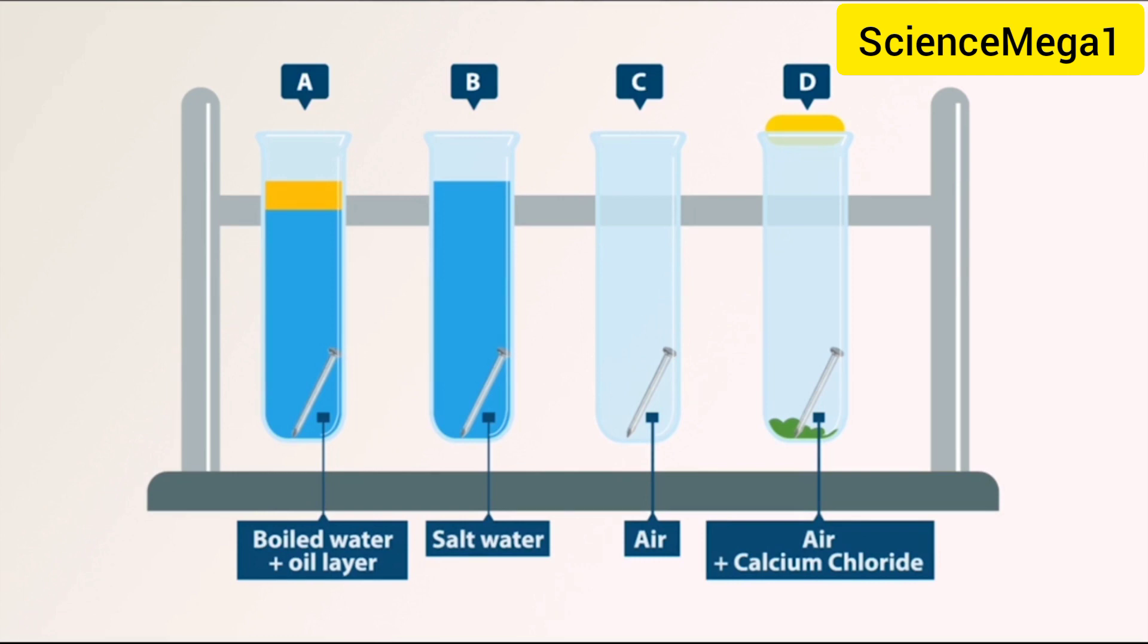On your screen you will observe that the nail in the salt solution is more rusty than the other nails in the other tubes. What this means is that salt solution is a factor that accelerates or speeds up rusting, and it can be deduced from the results that salt solution speeds up rusting.